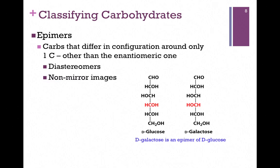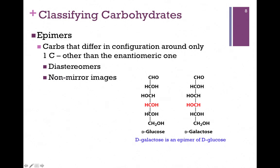Because of multiple chiral centers, carbohydrates may be non-superimposable and not be mirror images — those are called diastereomers. There's a special case of a diastereomer in carbohydrates where they're similar around every chiral carbon except for one, and those are called epimers. Here we have D-glucose and D-galactose — similar in every other way except for the fourth carbon, where the OH is on opposite sides.